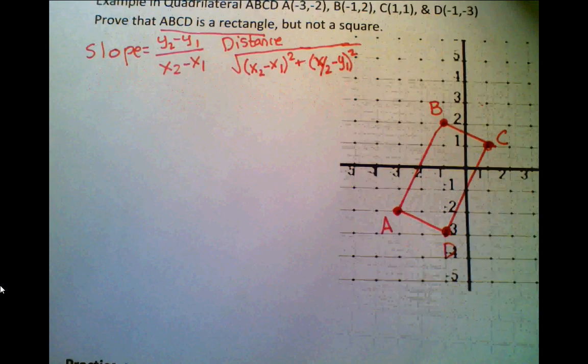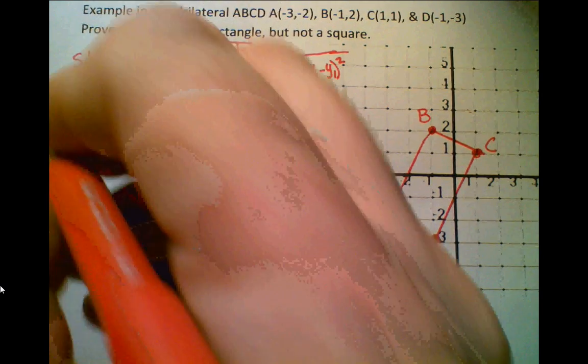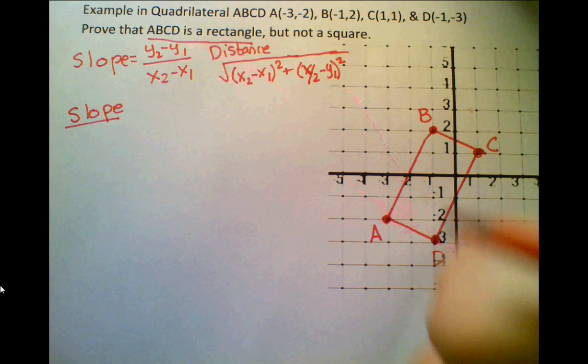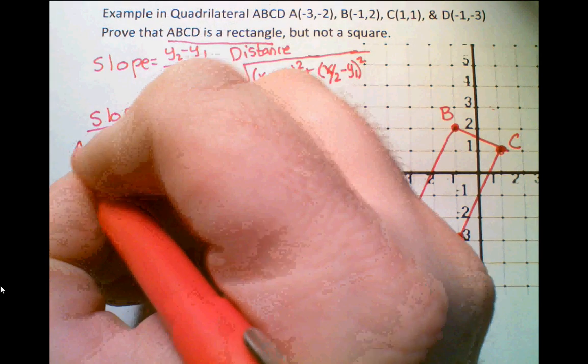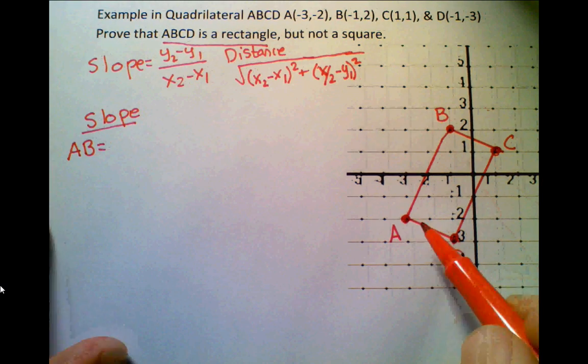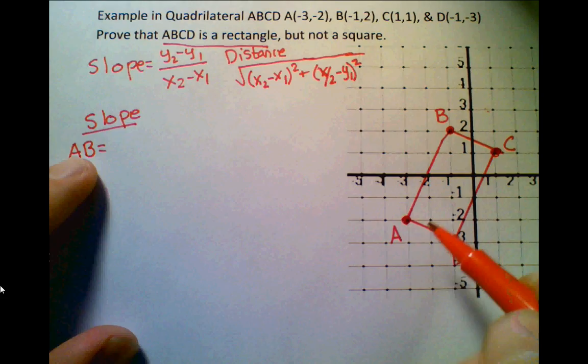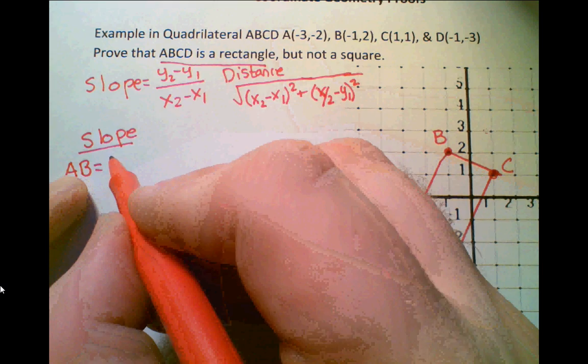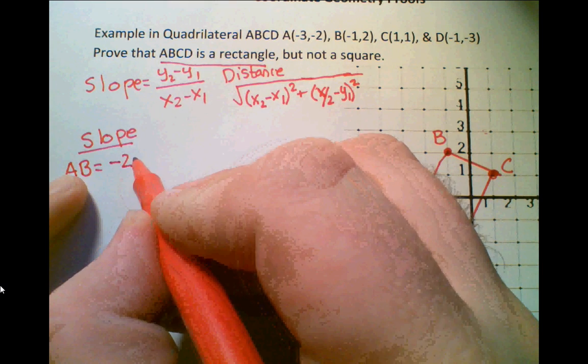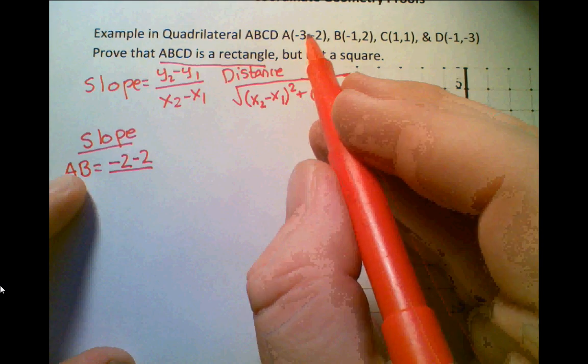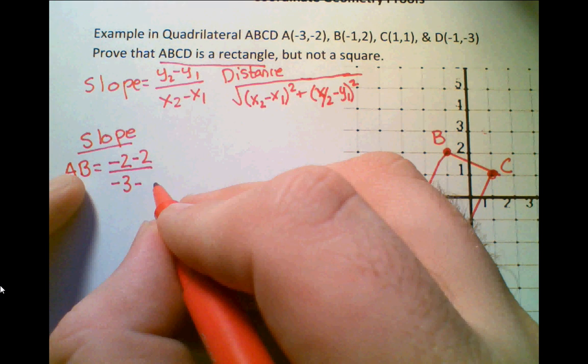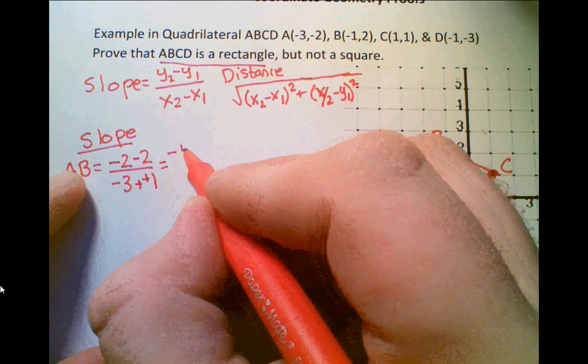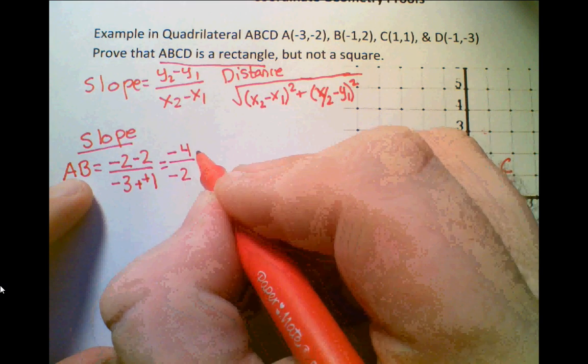So we're going to apply that formula to every single point here. Let's take a look. Let's first start with slope. Now, slope, we're going to do, first let's start with AB. AB is going to be, let's just take a look at the numbers. We have -2 minus 2, all over -3 minus -1. And that's going to, we have two negatives, we're going to make that positive, it becomes -4 over -2, which is just equal to 2.